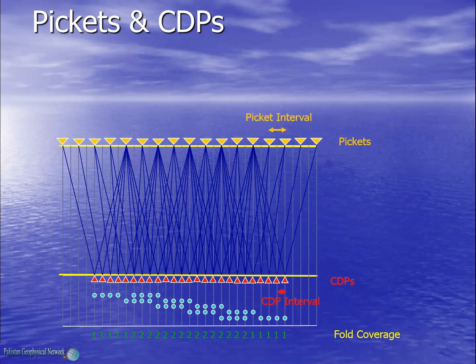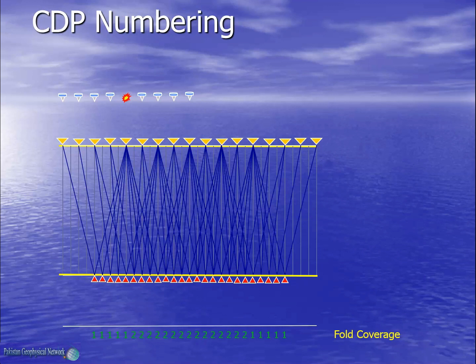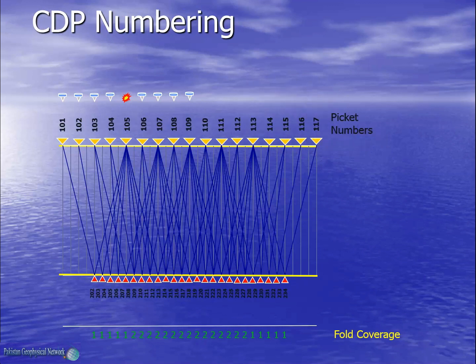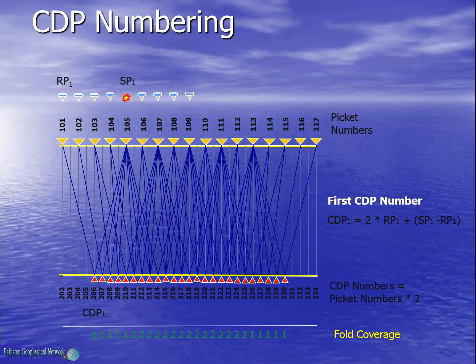It can be seen that the CDP interval is half of the picket interval. If shooting is carried out on every second picket, then the receiver interval is equal to the picket interval while the source interval is double the picket interval. If pickets are assigned numbers, then it is good practice that the corresponding CDP numbering is doubled. We can also compute the first CDP number from where the wave gets reflected using an equation: RP1 is the first picket number, SP1 is the first source point number, and CDP1 is the first CDP point where we get reflections. So this was a simple demonstration of various seismic acquisition geometries.